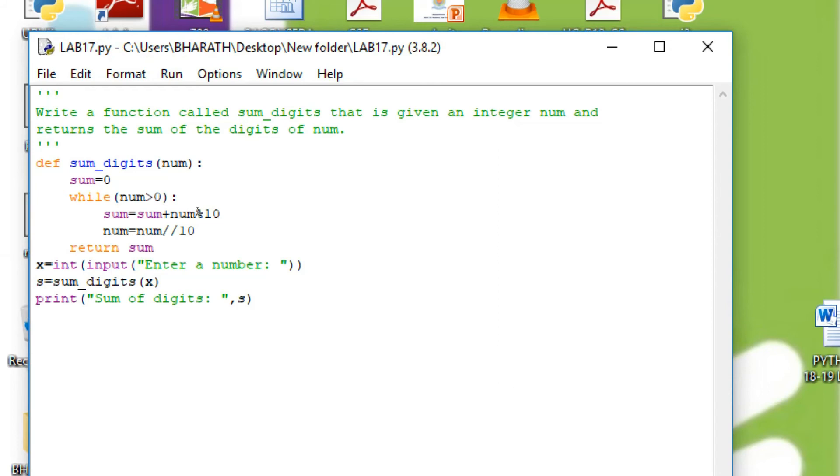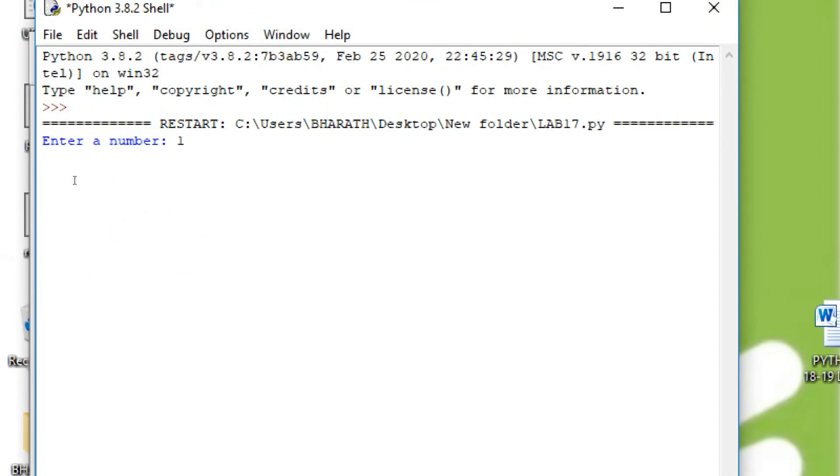So, now we see the execution of the program. Functions. How we can define a function by using def keyword. So, this is the function name. This is the argument. Here we are returning the value. Now, we see the execution. 153. It returns 9.